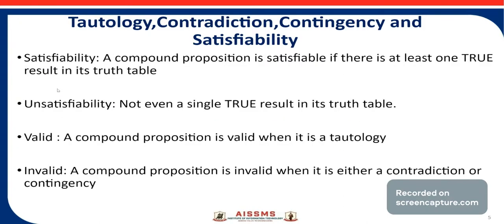Next is unsatisfiability. Unsatisfiability means there is not even a single true result in its truth table. That means contradiction is also unsatisfiability. Next one is valid — a compound proposition is valid when it is a tautology. Invalid means a compound proposition is invalid when it is either a contradiction or a contingency.